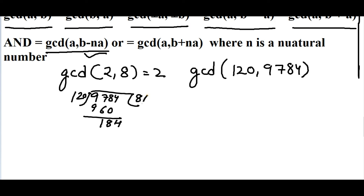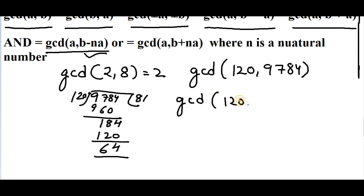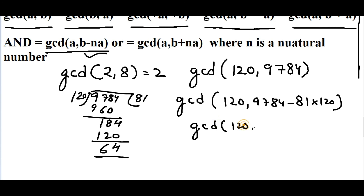Dividing 9784 by 120 gives a quotient of 81 with remainder 64. So gcd(120, 9784) = gcd(120, 9784 − 81 × 120) = gcd(120, 64). Now it's much easier to work with.